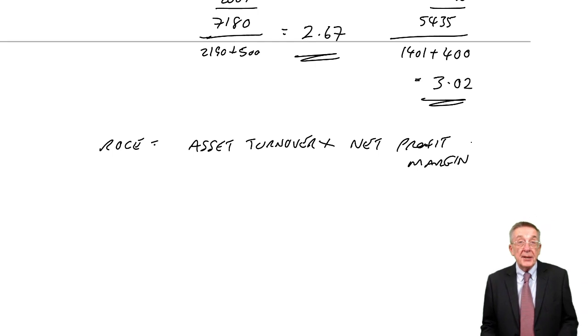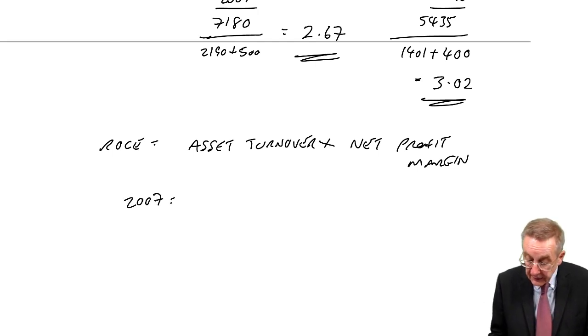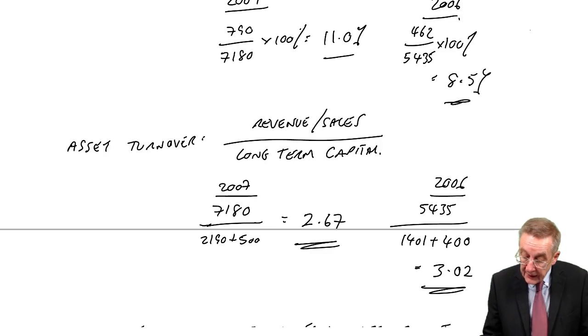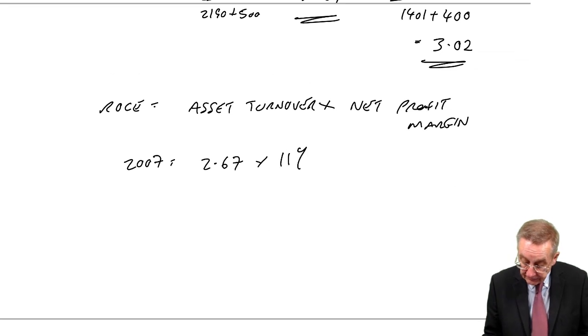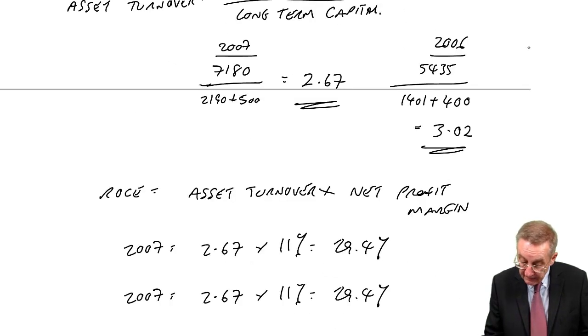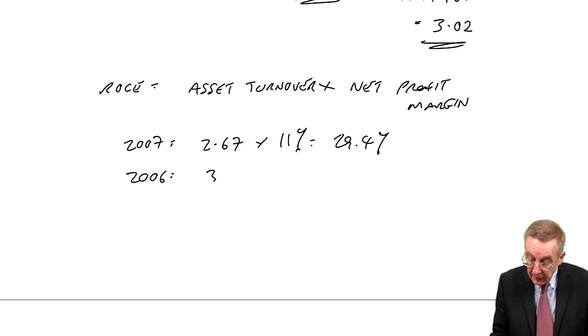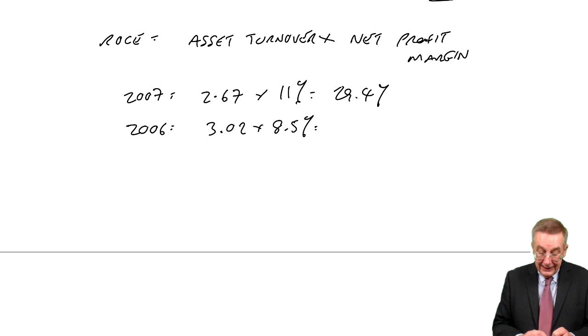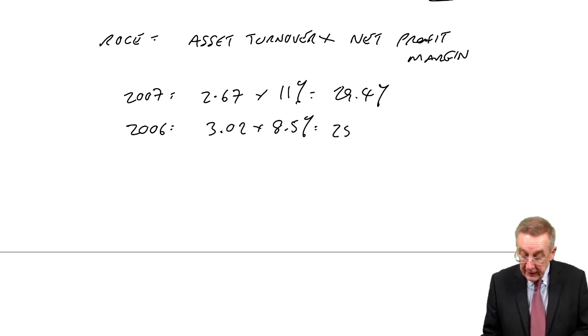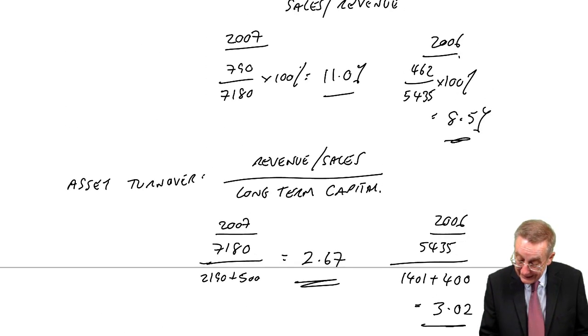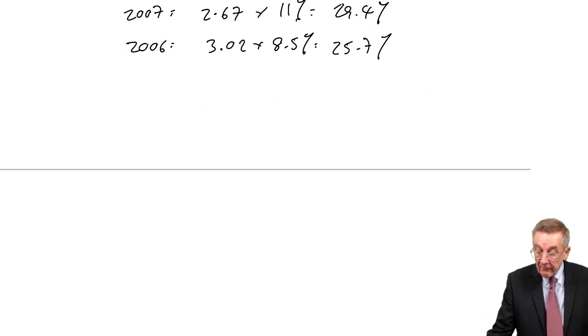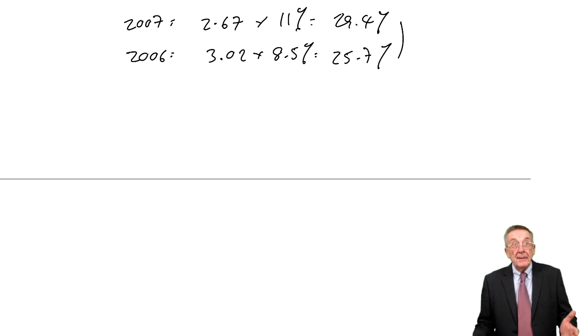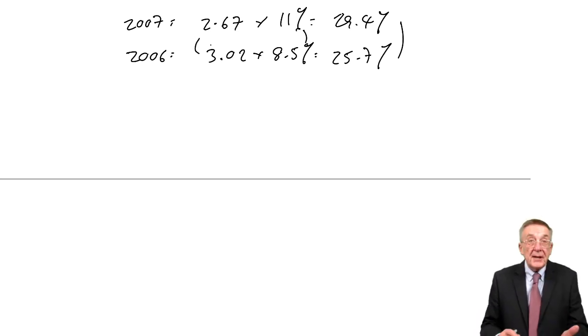It was either or both of increasing the asset turnover or increasing the profit margin. And do make sure you're aware and you remember that statement I've written that the return on capital employed is equal to the asset turnover times the net profit margin. Let's just check, although I appreciate there's a bit of rounding here, so it may not be precise. But you see in 2007, asset turnover was 2.67 and the net profit margin was 11%, which comes to 29.4%. And what was the return on capital employed? 29.4%. In 2006, asset turnover 3.02, net profit margin 8.5%, which comes to 25.7%. So overall it's increased, which is good. What you're aiming for is to increase either or both of those.